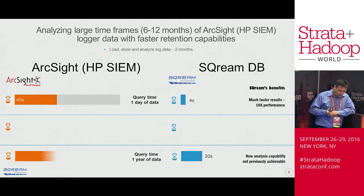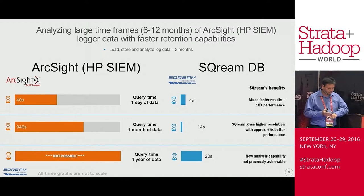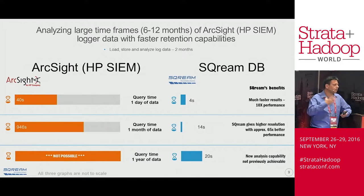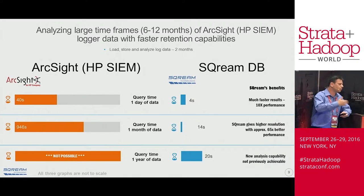The results are quite impressive. Before extending ArcSight with SQream, they could query one day back in about 40 seconds, and about 13 minutes going back a month. They couldn't analyze user activities for the last year at all. Cybersecurity breaches and threats are not based on a single attack — they are comprised of a multitude of events, usually spread across a year and a half. So in order to understand that you've been breached, you need to look at data beyond just the last week, looking way back at the abnormalities.